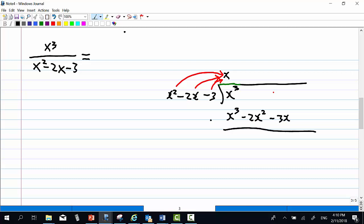And then we subtract. Just imagine that you have 0x square following x cube. And 0x following x square. 0x minus negative 2x square. You get 2x square. 0x minus negative 3x. You get plus 3x. Then we check. Can we have 2x square divided by x square. One way you get is you multiply x square by 2 now.